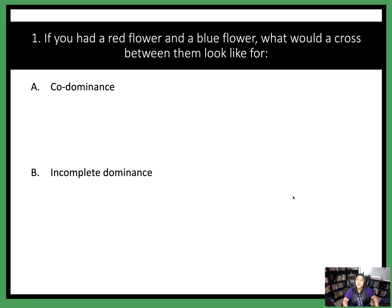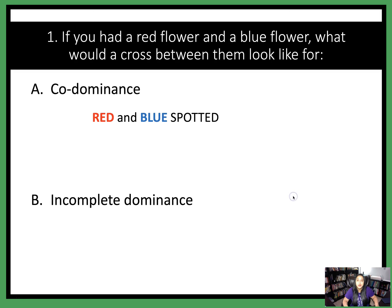Alright, for co-dominance, if we have a red and blue flower combined, we get red and blue spotted flowers. For incomplete dominance, if we combine a red flower and a blue flower, we end up with purple flowers.